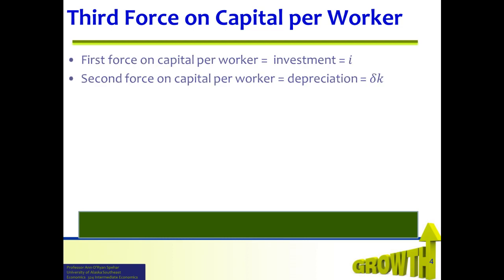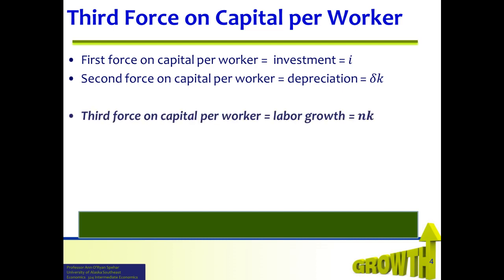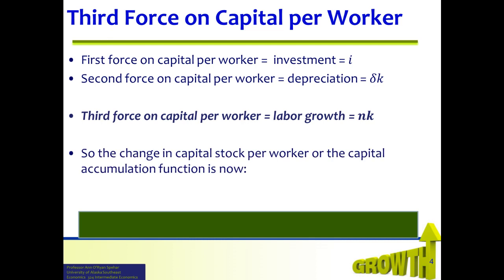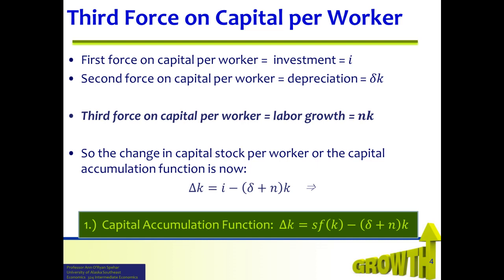There are now three forces acting on the capital accumulation function. The first force on capital per worker is investment, I, which causes increases in capital per worker. The second force is depreciation, delta times k, which causes capital per worker to fall. The third force is labor growth: nk causes capital per worker to fall. So the change in capital stock per worker is now given by: delta k equals investment minus the quantity (delta plus n) times k. This means the capital accumulation function is delta k equals S times f(k) minus (delta plus n) times k.